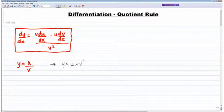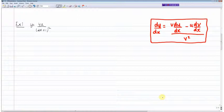So the example I've got for the quotient rule is as follows. It is y is equal to 4x divided by 2x plus 1 all squared.